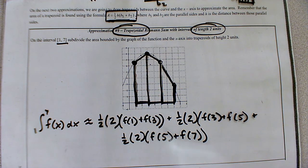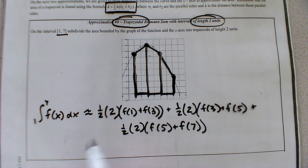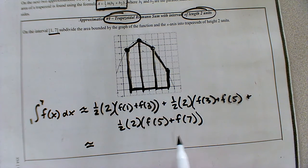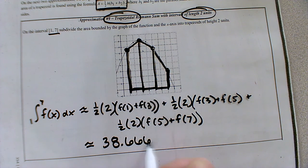All right, now again, since it's the same example, we should have these numbers available to us to help us with our calculation. If not, go ahead and find them using your calculator. But after you get done with your computation, we should get something like 38.6667.